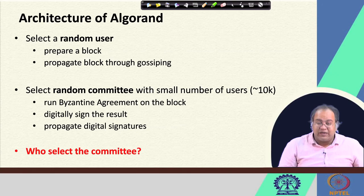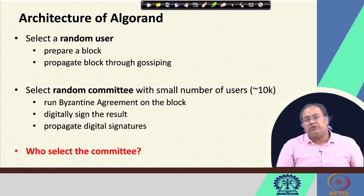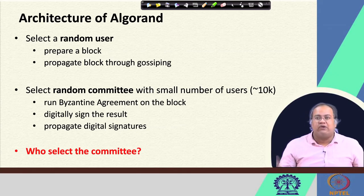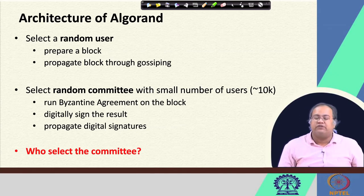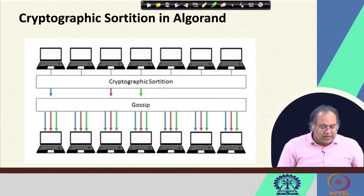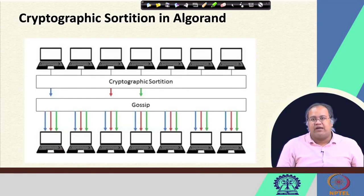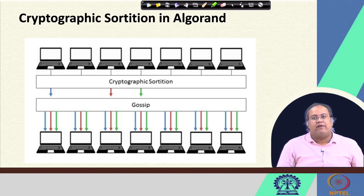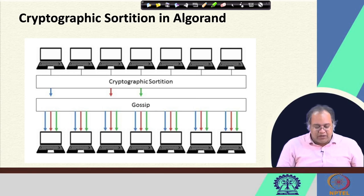The question remains: who is going to select that random committee? In a decentralized network, we cannot have any third party or trusted third party to select the committee for us. This is the most important question, and here Algorand actually does the magic. To select the committee, the magic that Algorand uses is called cryptographic sortition.